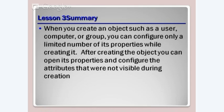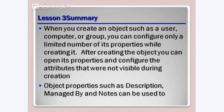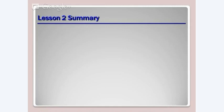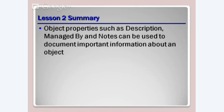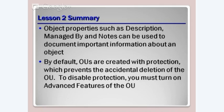Object properties such as description, managed by, and notes can be used — these are helpful. If you want to run a report on who works for maintenance or find all people under a specific manager, those fields help. Of course, you still have to go put that information in — it doesn't get generated automatically. By default, organizational units are created with protection and you can't just delete them.